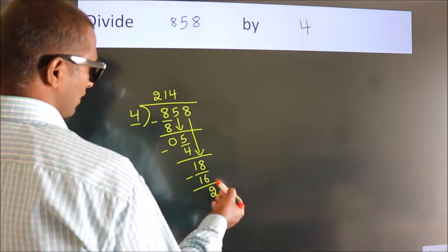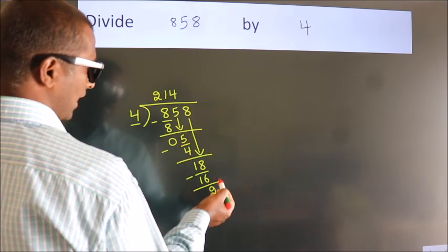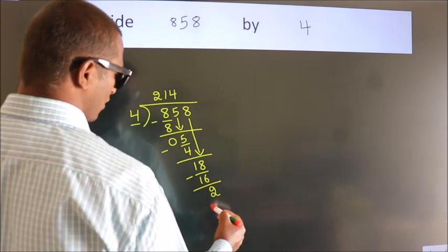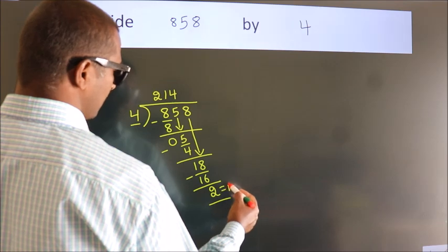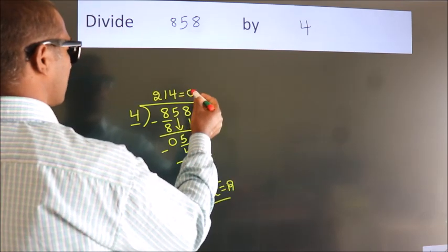After this, there are no more numbers to bring down, so we stop here. This is our remainder. This is our quotient.